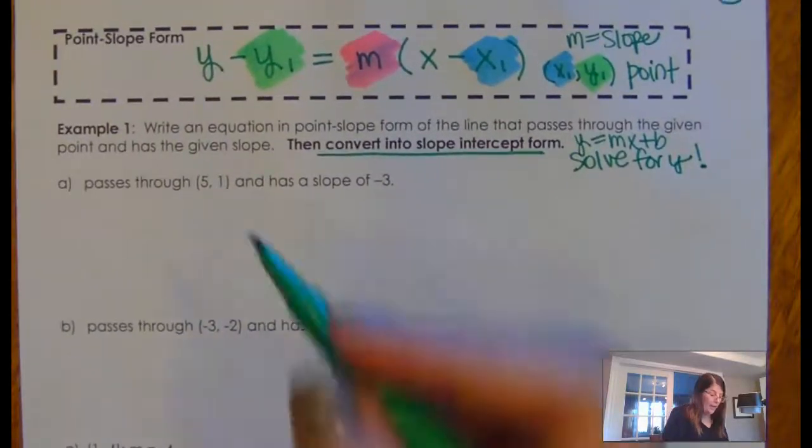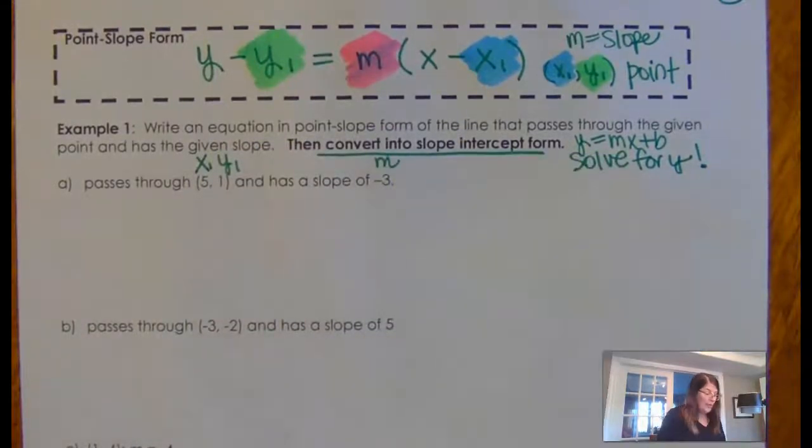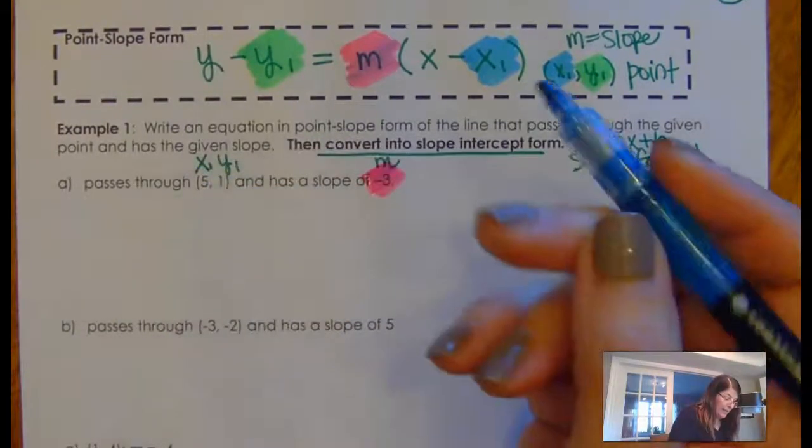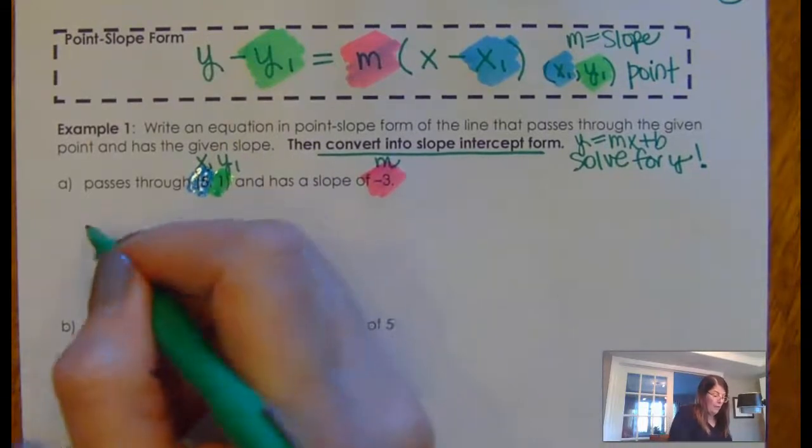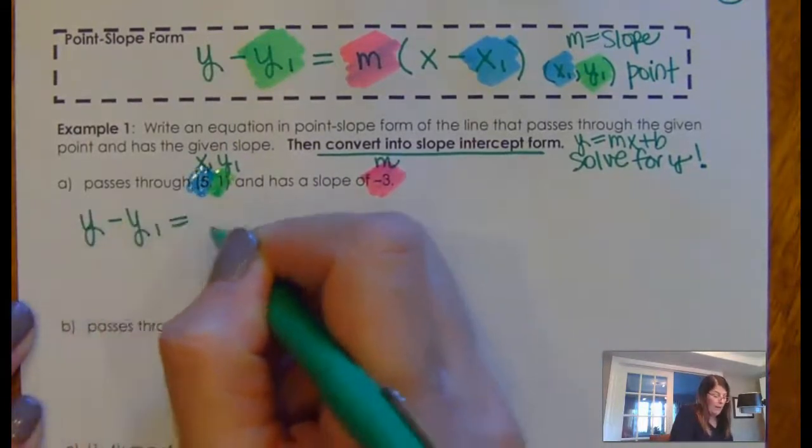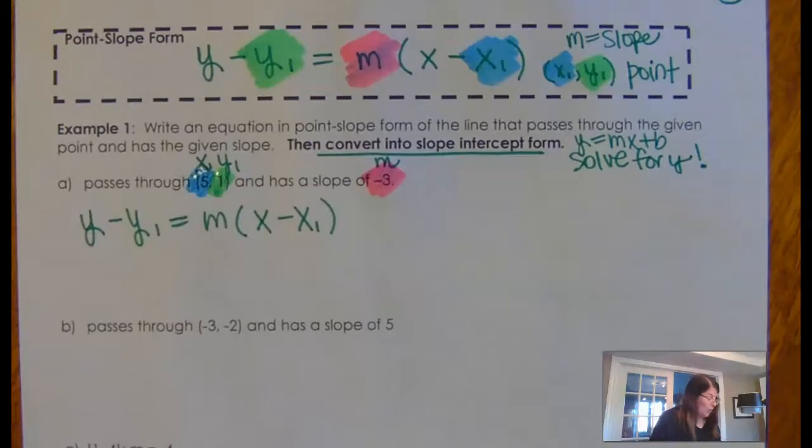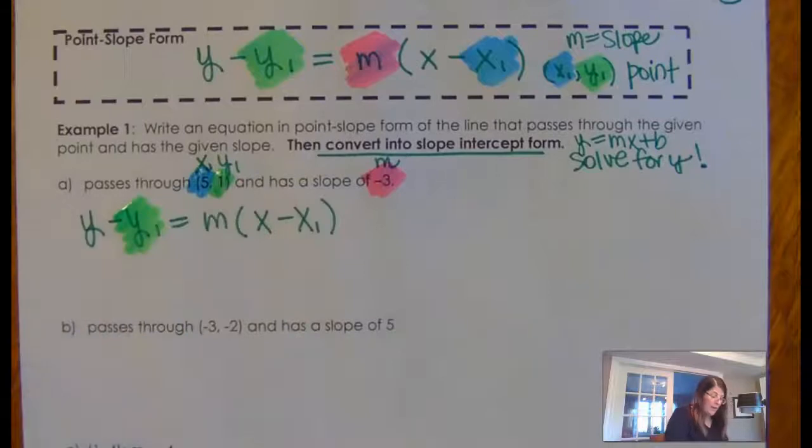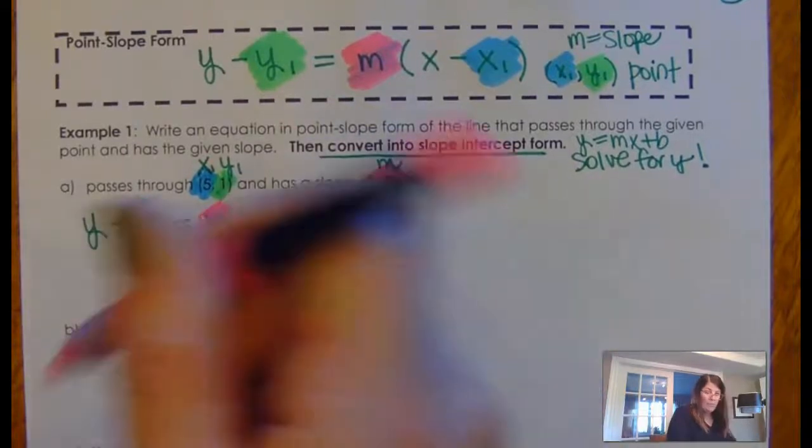So let's practice this. So first one here, this is my X1 and my Y1, and that is my M. So again, I'm just going to put those things into the spots. So here's the X1, and here is the Y1. So I'm going to start by writing out the formula. Y minus Y1 is equal to M, X minus X1. Now, remember, you guys, all you're doing is you're changing, you're plugging in the X1 and the Y1, and you're plugging in the slope, right?